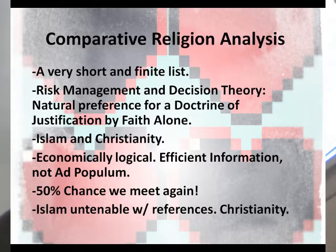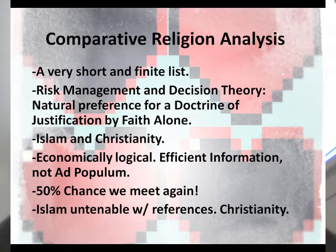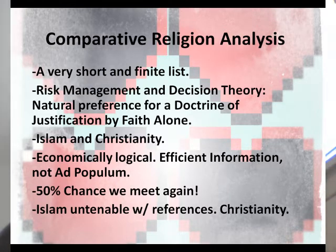Now we're at the comparative religion analysis, with a short and finite list. Decision theory has a natural preference for a doctrine of justification by faith alone. This means: if you believe in our god, that's all you have to do to receive the infinite reward — as opposed to justification by works. The reason there's a natural preference for this is that it eliminates requirement two: just by choosing a sufficiently fathomable god, you've already fulfilled the requirement of meeting its demands. It's far less risky and a much better decision-theory choice.